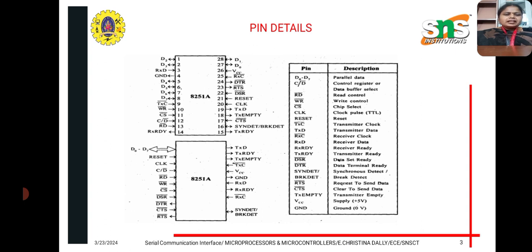These are the pin details of the 8251. It consists of pins D0 to D7, used for the data bus buffer. We also have the control register, read/write, chip select, clock, and reset. The 8251 has two sections: the transmitter section and the receiver section. Transmitter clock, transmitter data, and transmitter ready come under the transmitter part. Receiver clock and receiver ready come under the receiver section, along with supply and ground.